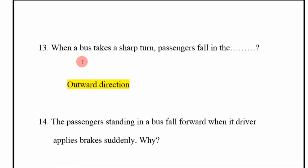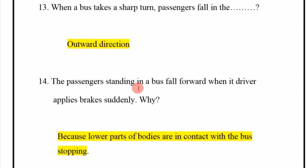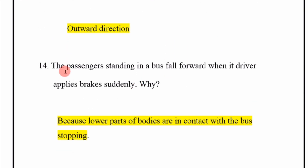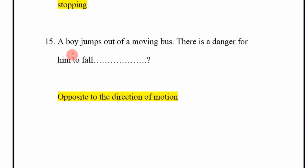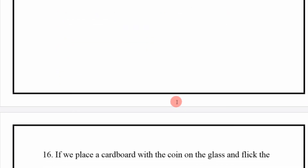When a bus takes a sharp turn, passengers fall in the outward direction. Passengers standing in a bus fall forward when the driver applies the brake suddenly because the lower parts of their bodies are in contact with the bus and stop. A boy jumping out of a moving bus is in danger of falling in the direction opposite to the direction of motion.